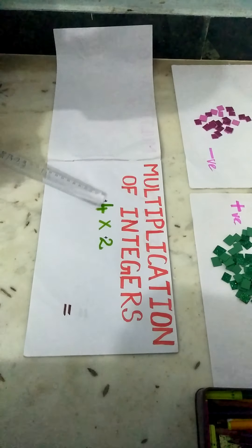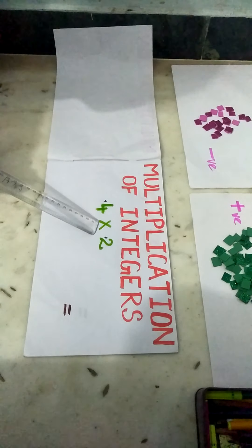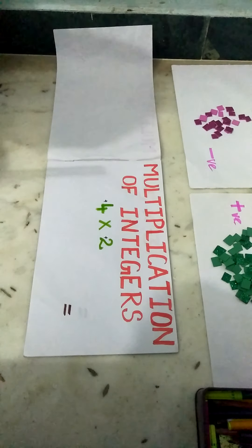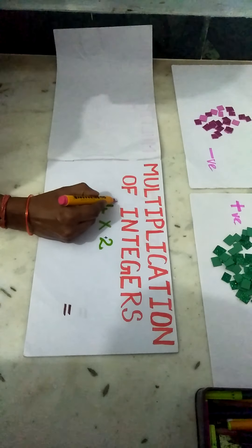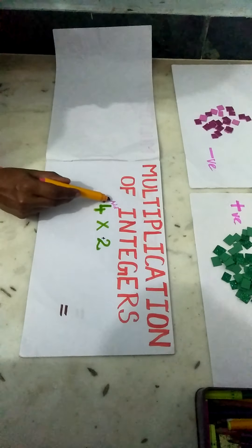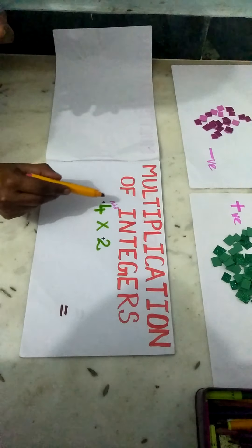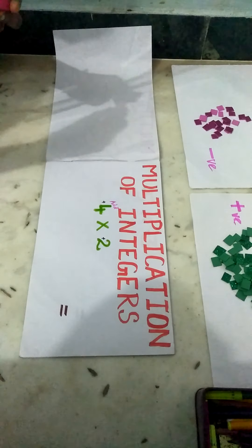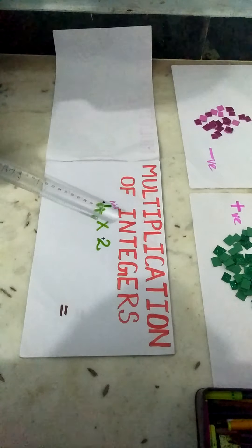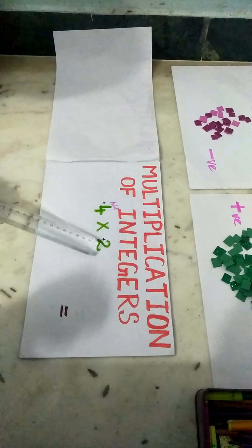So the first question: 4 times 2. That is add — because multiplication is repeated addition. We are going to add 4 groups of positive 2.